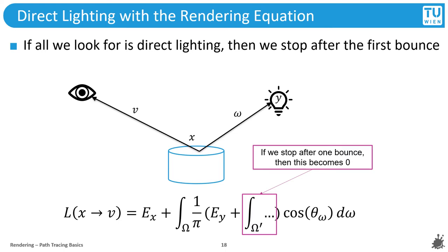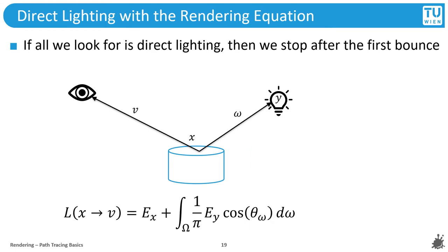The only unknown is the recursive part. In the expanded version, there is an additional factor for the emitted light at point y and another recursive integral for all future bounces. But if all we want is direct lighting, we don't need information from additional bounces — any light they contribute would be indirect lighting — so we can set that term to zero. The emitted light at point y is something our framework can provide: in practice, it's just a light intensity and color parameter you define for objects you want to act as light sources.